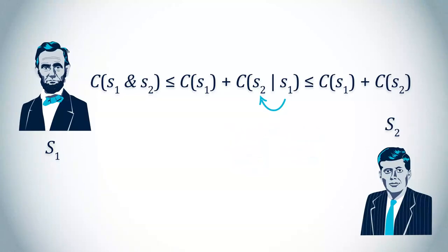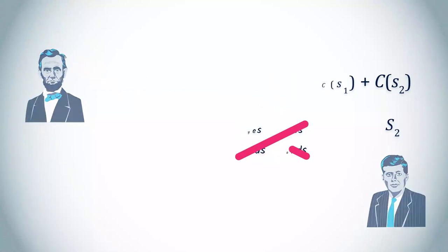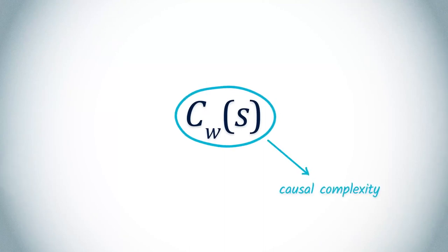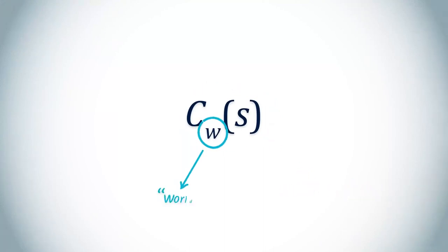We understand why having common characteristics makes the two events simpler to describe as a whole. But in what way is the coincidence abnormally simple? After all, Lincoln and Kennedy both had eyes and hands, but this resemblance does not contribute to the coincidence. To understand how simplicity can be abnormal, we have to consider another form of complexity called causal complexity or complexity in the world, CW.